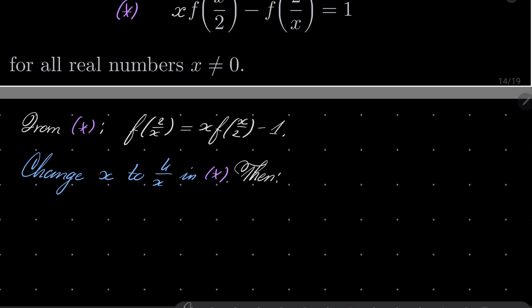Then we have the following: 4/x times f of (4/x)/2 minus f(2/(4/x)) equals 1.